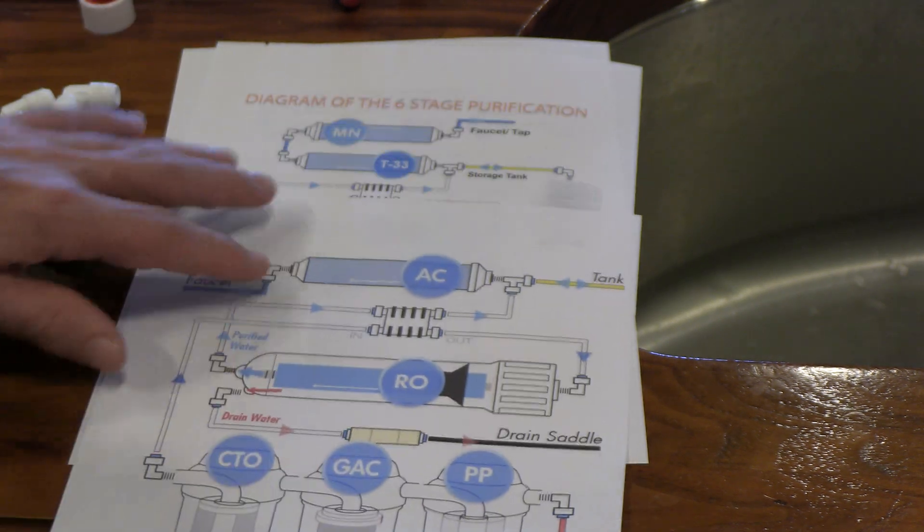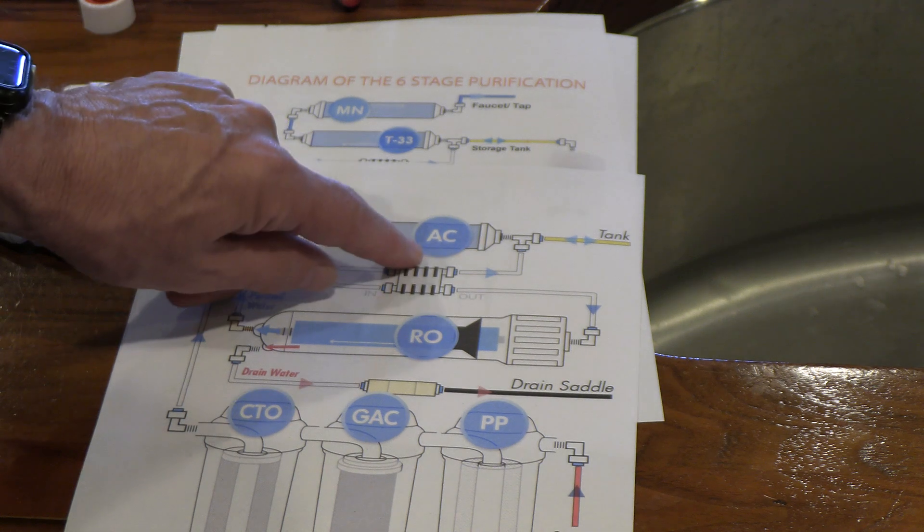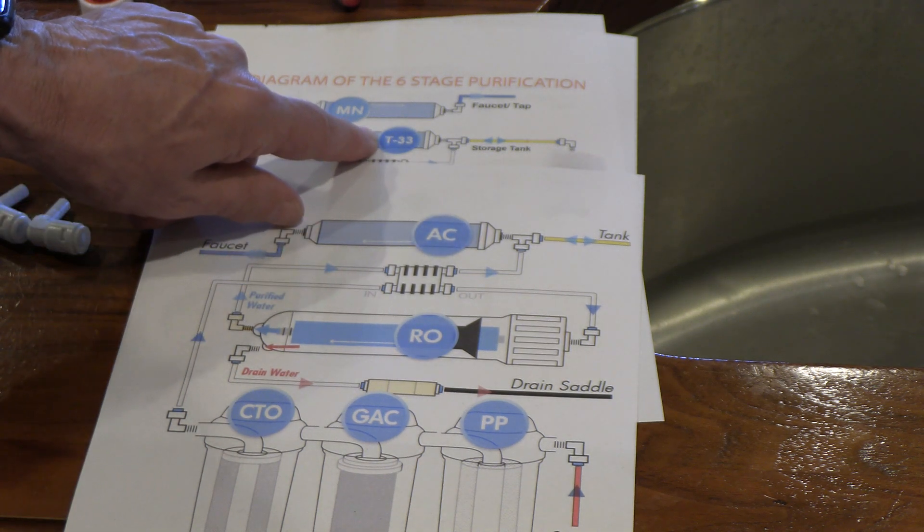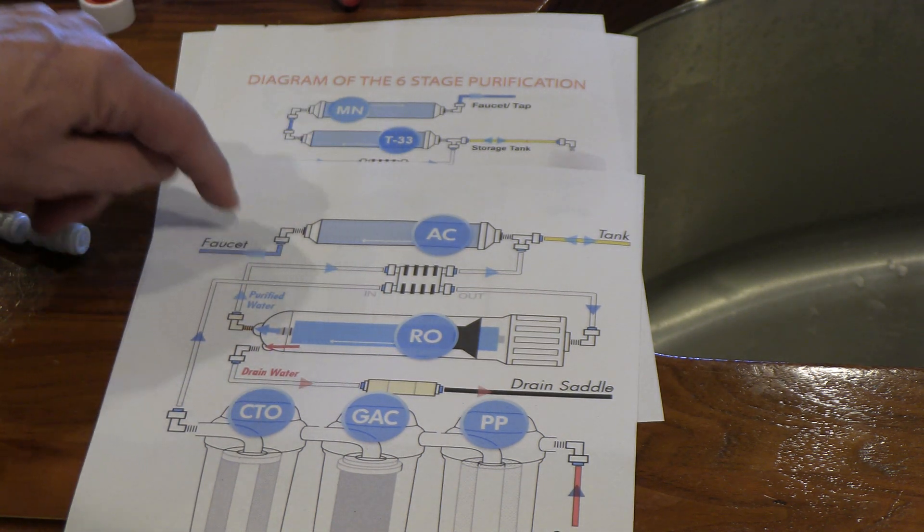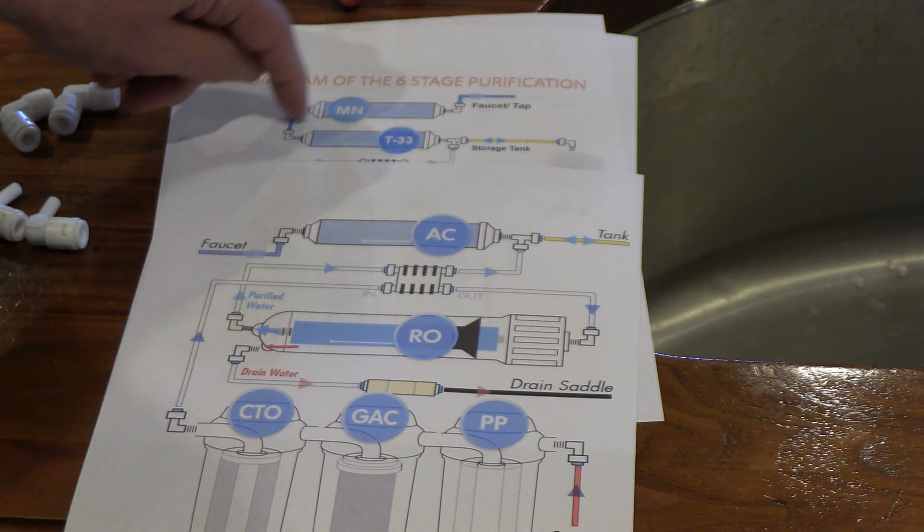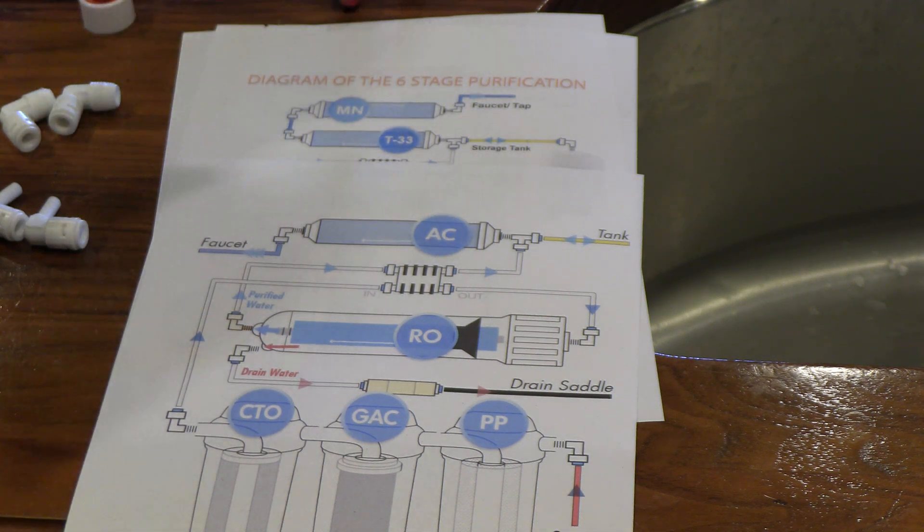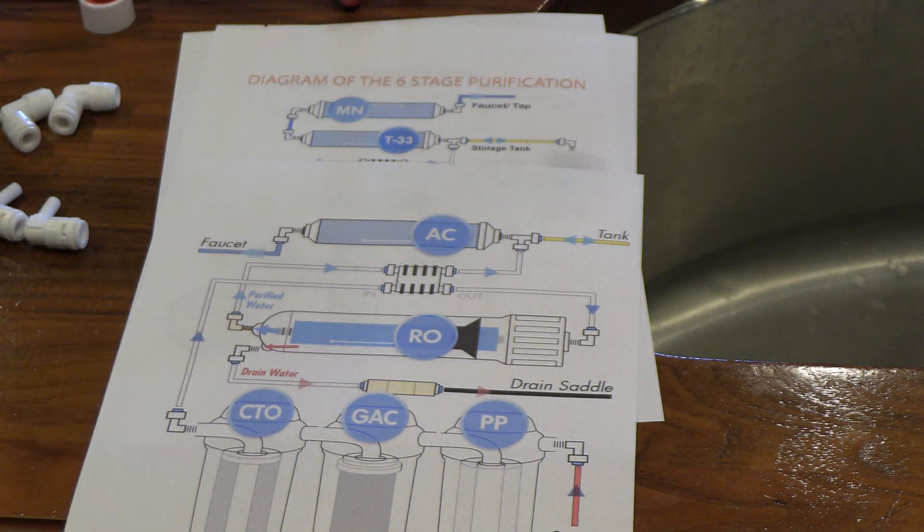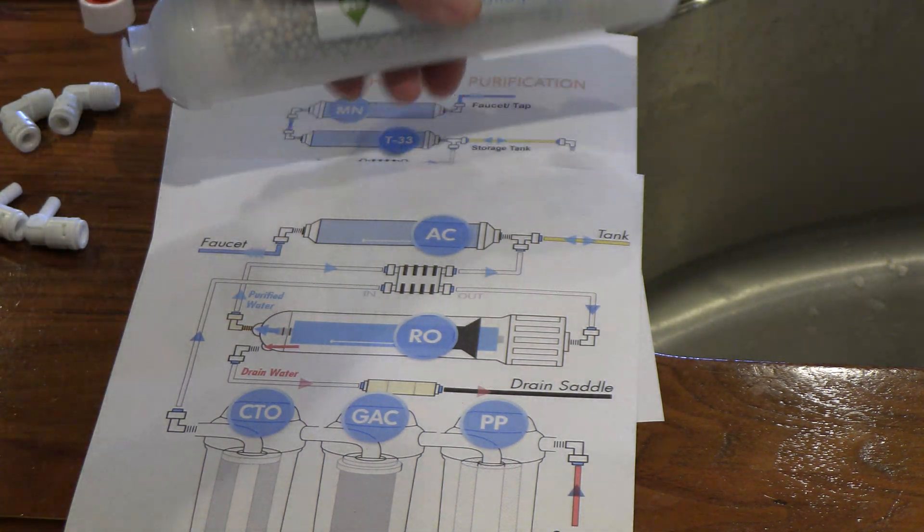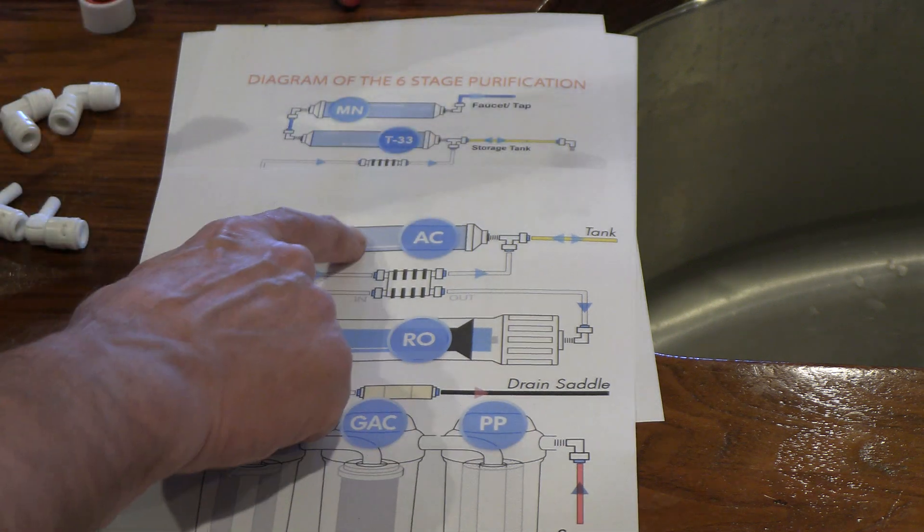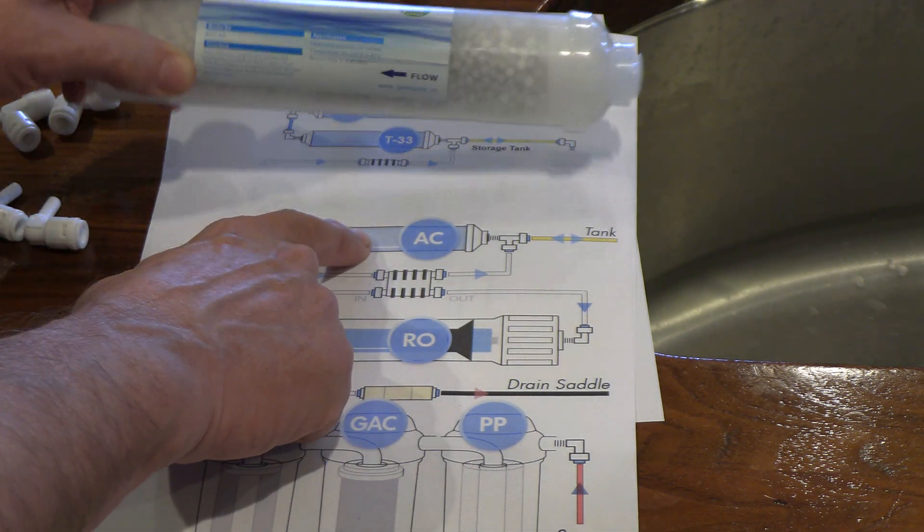If we add the sixth stage to this, this AC is a T-33 filter. Basically, instead of going right to the faucet, it goes through the mineral filter into the faucet. So we're going to put this in line between the T-33 and the faucet.